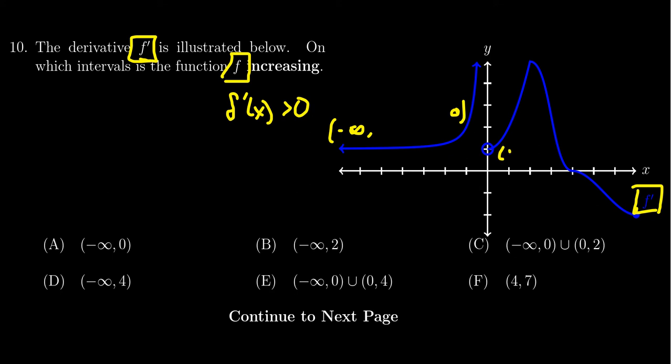There's some type of discontinuity happening at 0, but then from 0, it continues on until we get to 4. So the derivative is positive from negative infinity to 0, union 0 to 4.